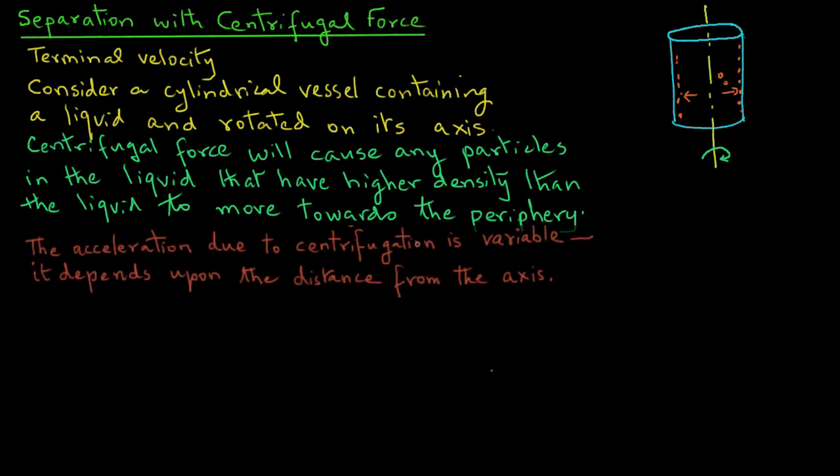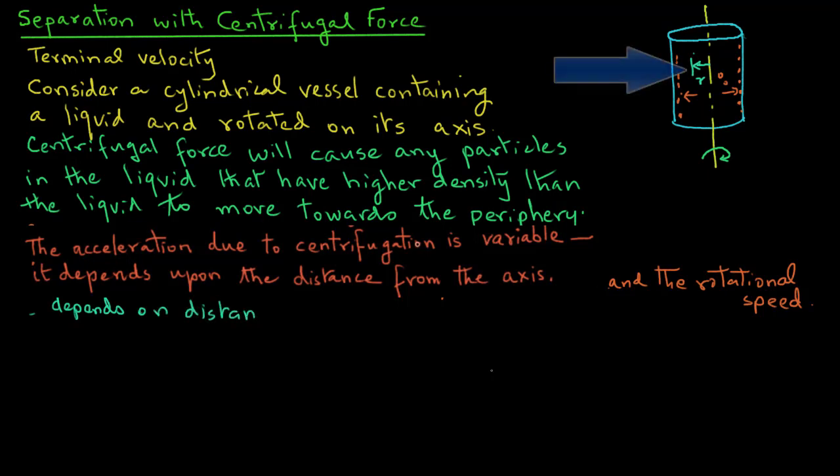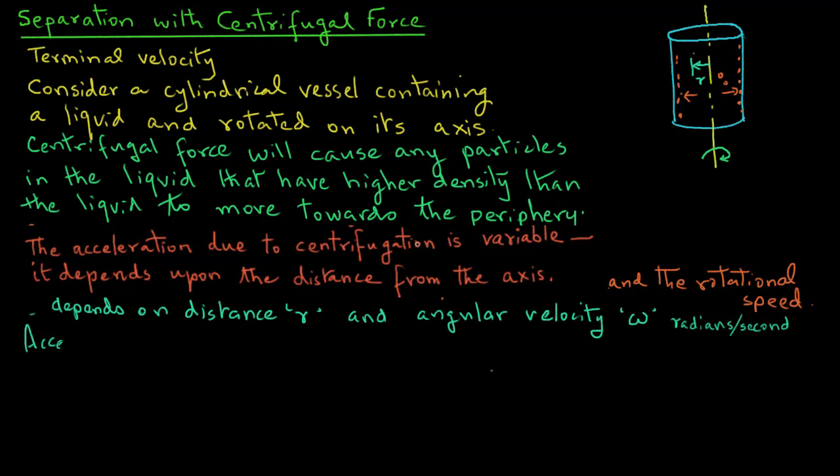Now the acceleration due to centrifugation is variable as it depends upon the distance from the axis and the rotational speed. So in terms of symbols, the acceleration will depend on this distance r from the central axis and the angular velocity omega, and we use the units radians per second for angular velocity. The acceleration in this case will be r times omega square.